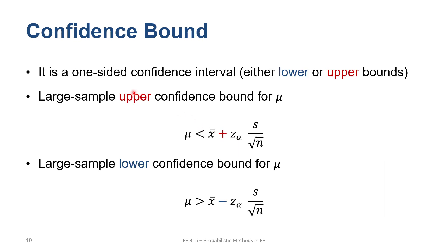The confidence bound is one-sided. If we take one side, it gives the upper bound; if we take the other side, it gives the lower bound.